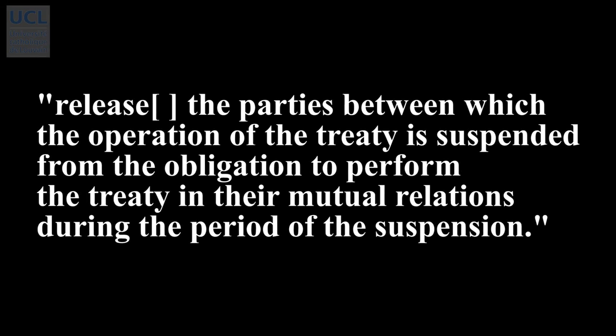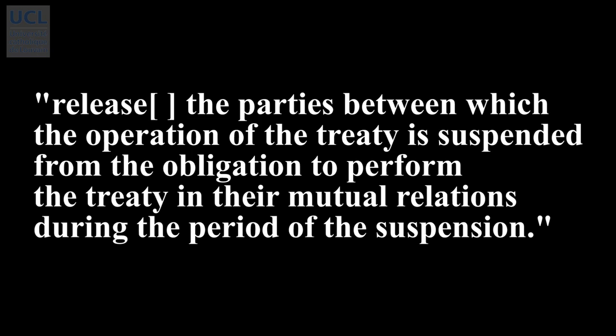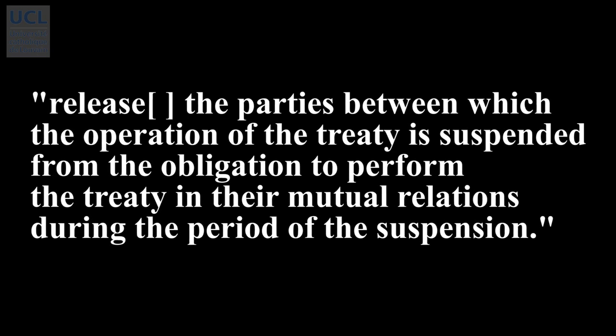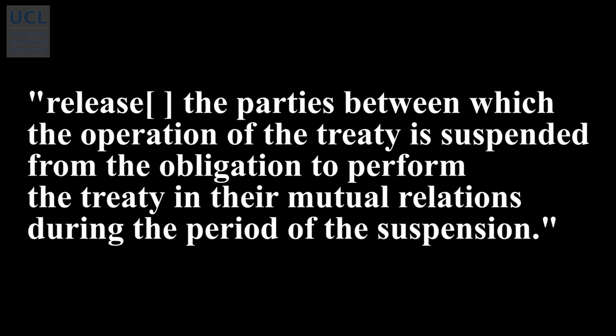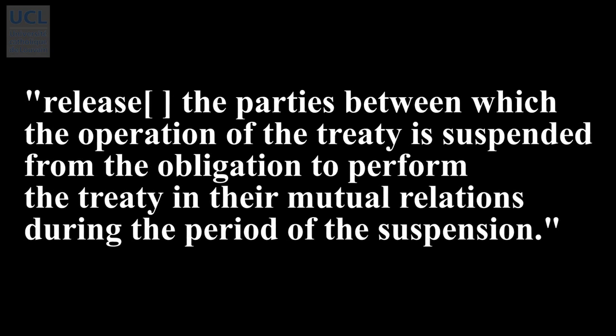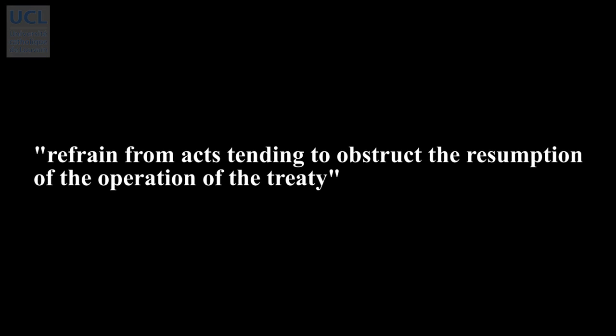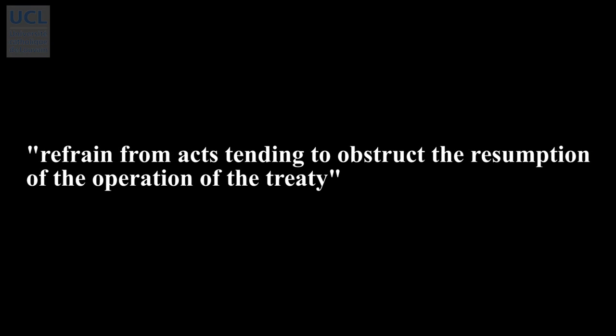Compared with termination and withdrawal, which result in parties not being bound anymore by the treaty, the consequence of suspension of the operation of a treaty is, as article 72 of the Vienna Convention puts it: "it is to release the parties between which the operation of the treaty is suspended from the obligation to perform the treaty in their mutual relations during the period of suspension." But the suspension has no effect for the parties which are not affected by the suspension. During the time of suspension, the parties must refrain from acts tending to obstruct the resumption of the operation of the treaty, because suspension is only a temporary measure.